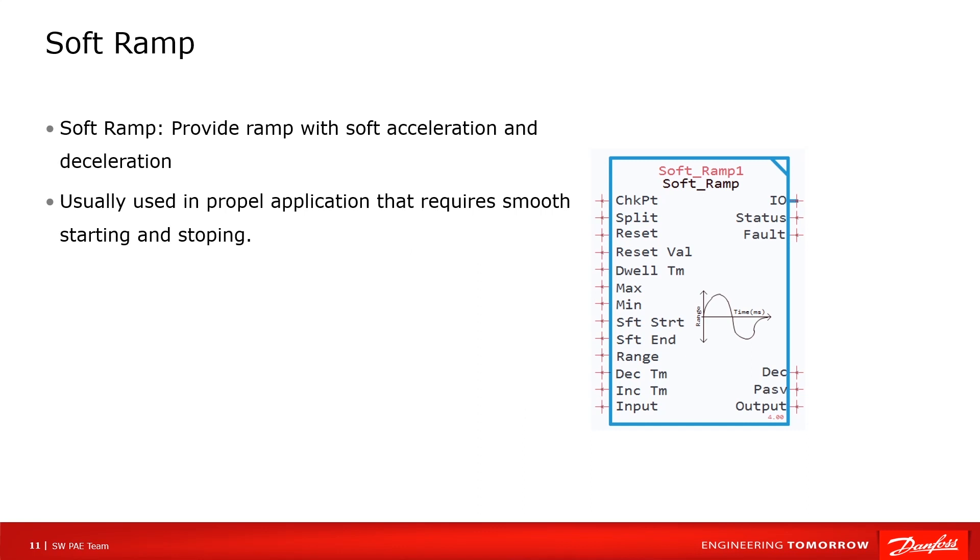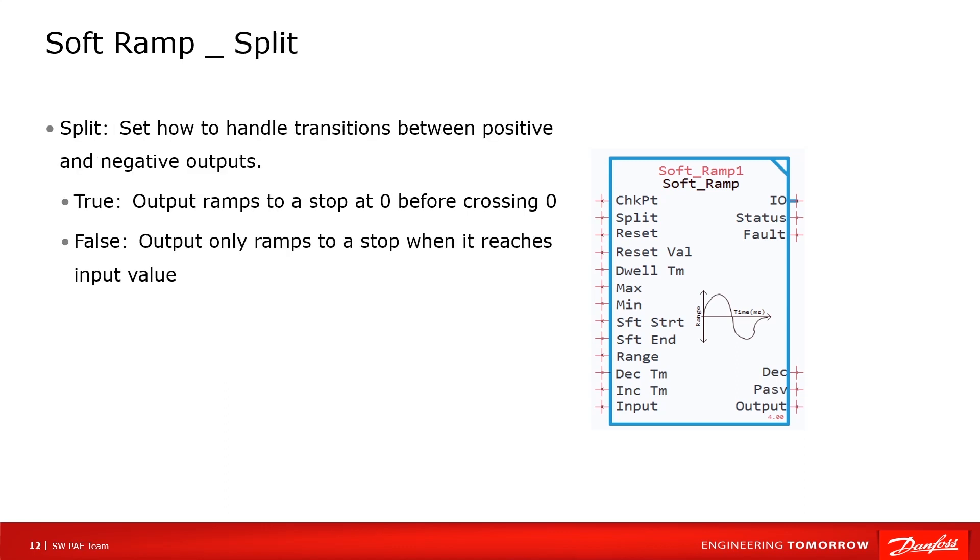In this slide, we will look at the function block Soft Ramp. It's not difficult to find the function of this block is to change the slope of signals, make them smooth. Commonly used for slowing down and soft starting in devices. Let's look at the configuration.